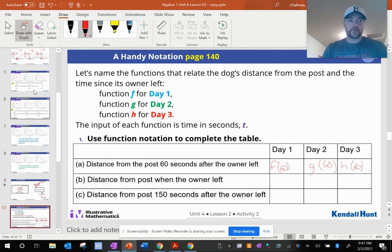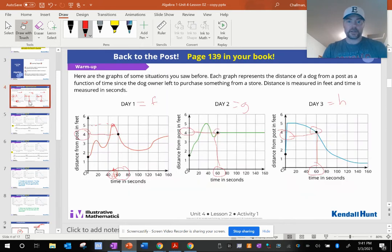So like f of 120 for this one would be about two and a half feet. See that? About two and a half. G of 120 would be exactly four feet because the dog laid down. And h of 120 would be less than one foot.